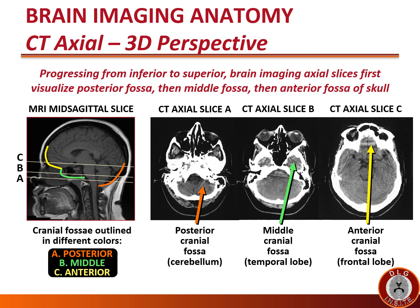When identifying anatomy on brain imaging, it is best to keep a three-dimensional perspective, understanding the way the brain sits in the three cranial fossae. Progressing from inferior to superior, axial slices first visualize the posterior fossa. Slice A is the most inferior slice, and you can see the posterior cranial fossa outlined in orange, shown with the orange arrow on slice A.